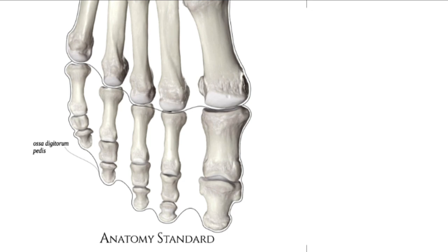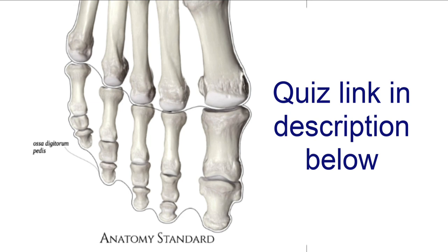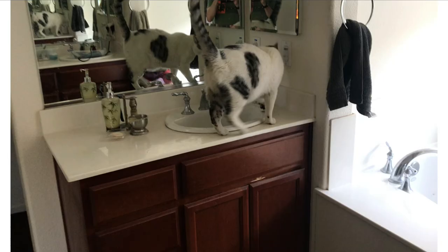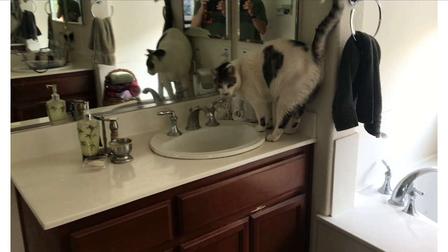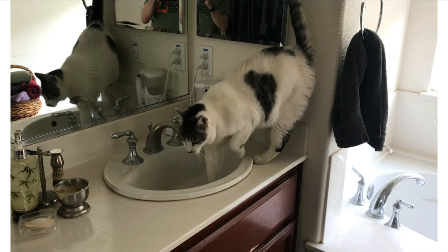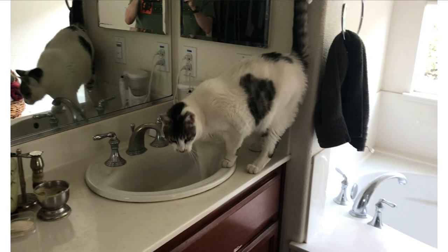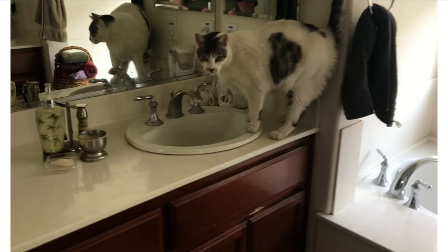This brings our video to an end. If you would like to take a quiz, there is a link in the description below. This is the last of the playlist that goes over the bones of the skeleton. Here are the image attributions. And finally, here is the last cat video you'll see for a while — this one is somewhat long because it is the last video. You can see that Apollo does like the faucet, which is typical of cats, and he usually finally gets his way, which is also typical of cats. Enjoy Apollo.